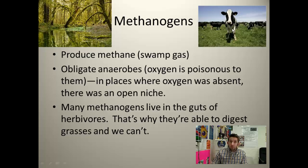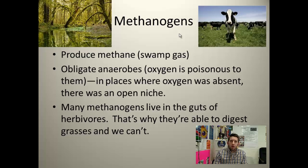Another source is cows — not directly the cows, but the methanogens within the cows' guts, within their intestinal tract. The methanogens are obligate anaerobes. They're obligated to live where it's anaerobic, meaning they don't like oxygen. Oxygen is actually poisonous to them — it'll kill them. So they live where oxygen is absent. And if you think about that evolutionarily, as the Earth transitioned to having oxygen from the cyanobacteria, there was an open niche, because those obligate anaerobes passed away.